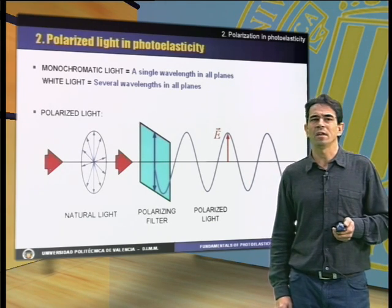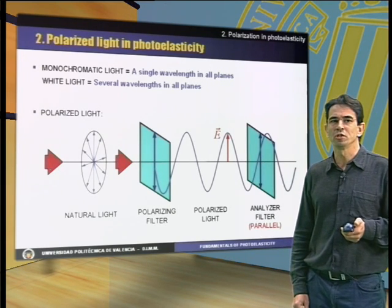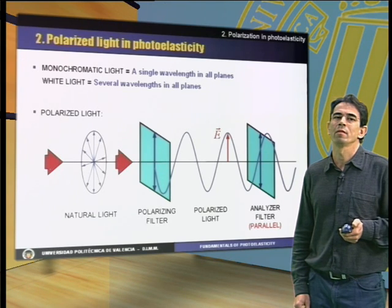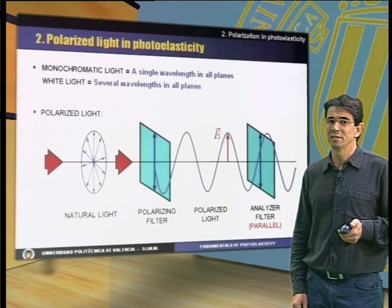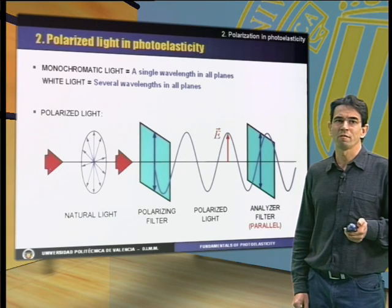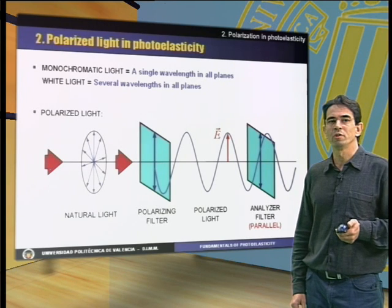If a second polarizing filter, called analyzer, is positioned across the ray path after exiting the first filter, polarizer, in such a way that both have parallel polarizing directions, then the ray of light will go through the second filter.